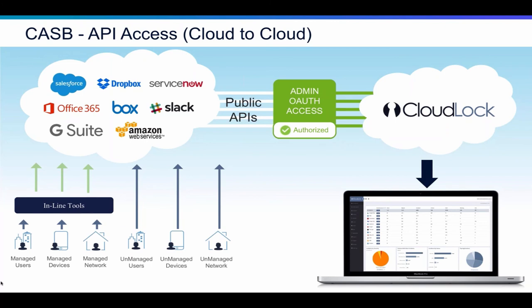The API-based approach also affords us the ability to deploy in minutes to cover massive organizations, and to leverage the capabilities native to these cloud applications. For instance, within Salesforce you can quarantine a field, and CloudLock — because we're API-driven — can trigger that as a response action to a DLP violation. Similarly in Box, when we find a DLP policy violation we can take an automated response. This allows increased security and a superior security posture, but also less security and operational overhead — because I've never talked to a security executive who says they have too many security analysts or too much time on their hands. It's always a matter of doing more with less.